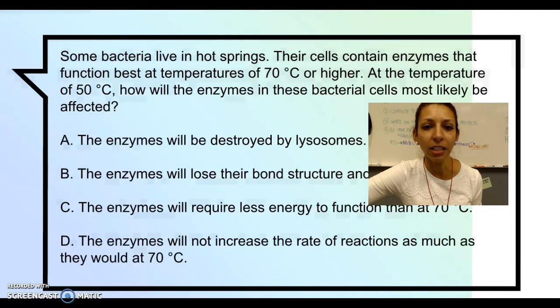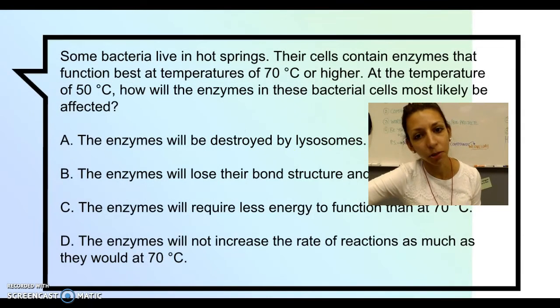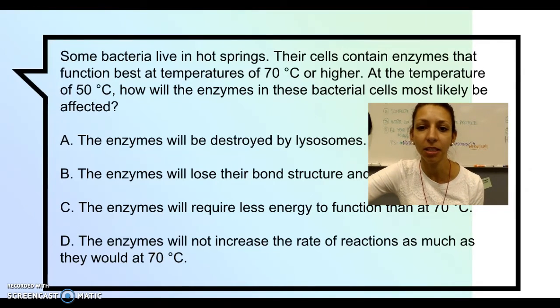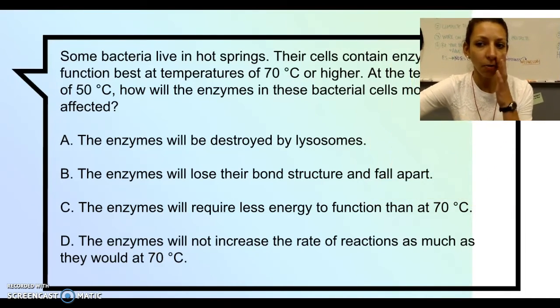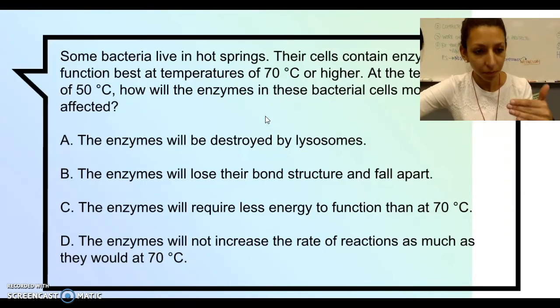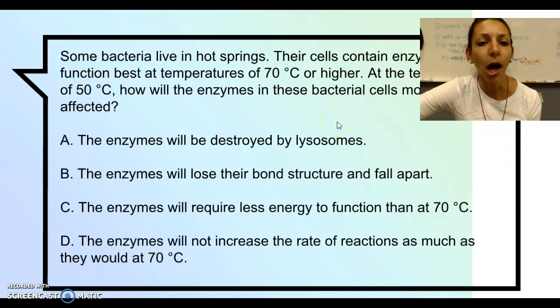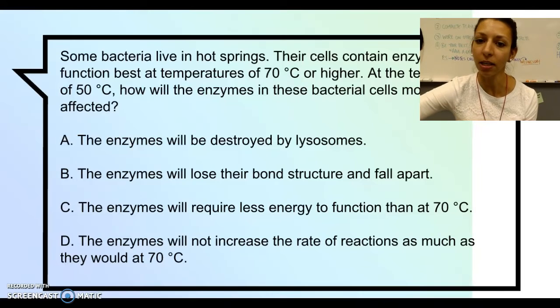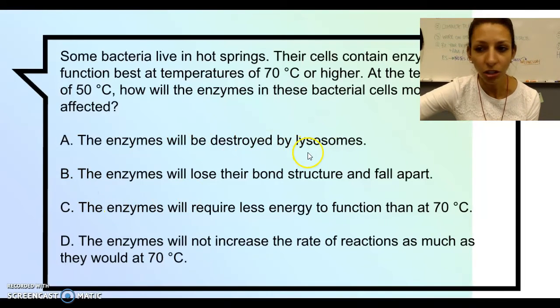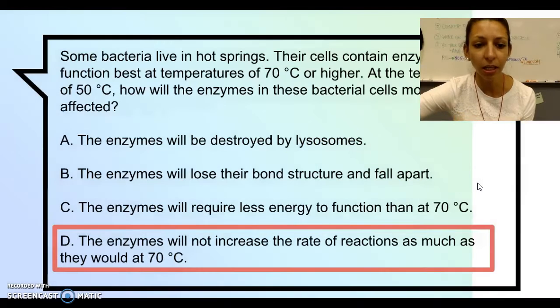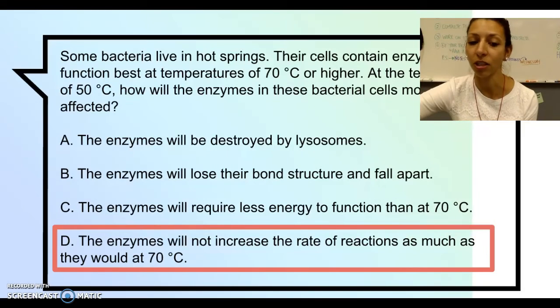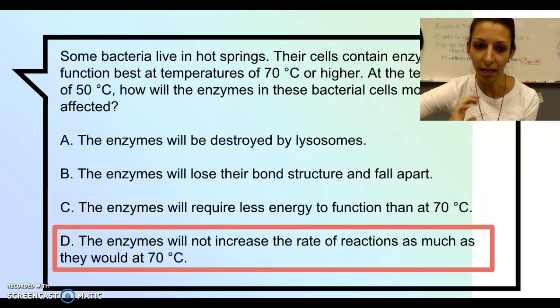Some bacteria live in hot springs. Their cells contain enzymes that function best at temperatures of 70 degrees Celsius or higher. At the temperature of 50 degrees Celsius, how will the enzymes in these bacterial cells most likely be affected? Now remember, as things go cooler, the enzyme may not move as quickly. There will just be less random movement of these molecules. But also because the enzyme functions best at 70 degrees Celsius, it's probably not going to function as well. So the best answer here is that the enzymes will not increase the rate of reactions as much as they would at 70 degrees Celsius. So they're not going to do their job as well when the temperature isn't at that optimum temperature that the enzyme needs.